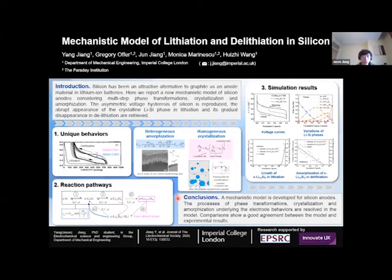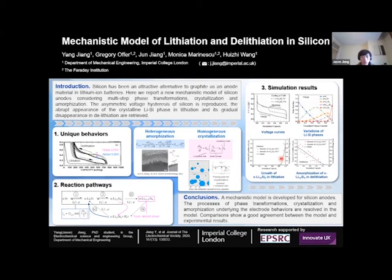Based on the newly proposed model, we successfully reproduce the voltage curves of silicon. We can see in this figure that the voltage will jump when silicon is highly lithiated and the voltage curve will present a flat plateau in the discharge branch. This model can also trace the variations of different silicon phases, and we successfully capture the abrupt appearance of the crystalline silicon phase in lithiation and its gradual disappearance in delithiation.